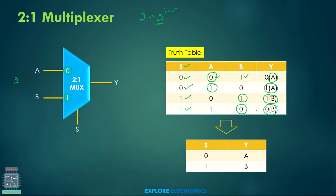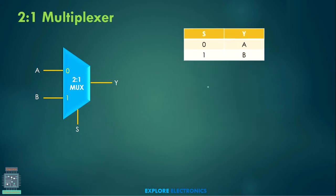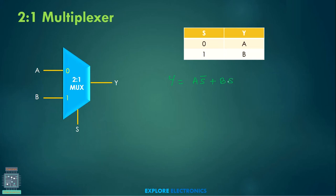We can simply write the truth table as: when S = 0, A will be the output; when S = 1, whatever we have in B will be the output. Now let us write the Boolean expression. Y is generated as: A is selected when S is 0, so we write A·S̄, and B is the output when S = 1, giving B·S. Therefore, Y = A·S̄ + B·S is the expression for the 2-to-1 multiplexer.